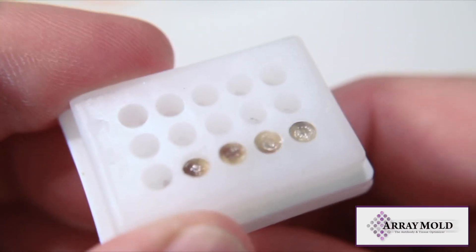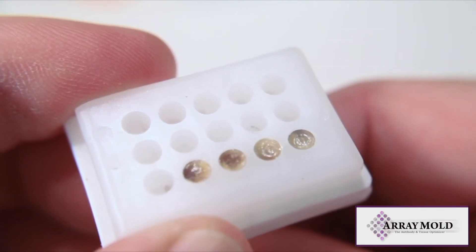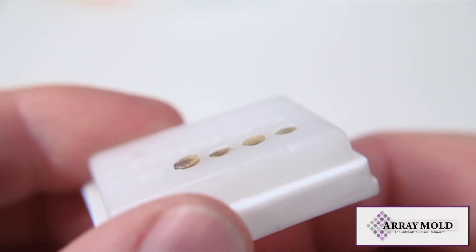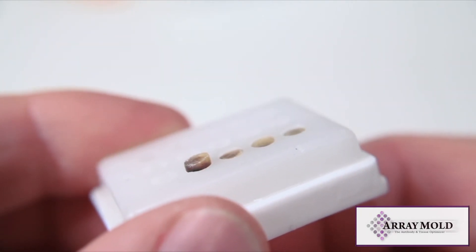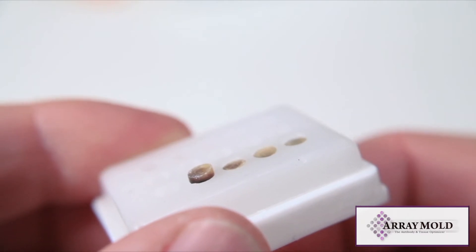Align the straight pin so that it is behind the drop core. Slowly push the straight pin through the back of the cassette and gently push the core up to the top of your array mold.